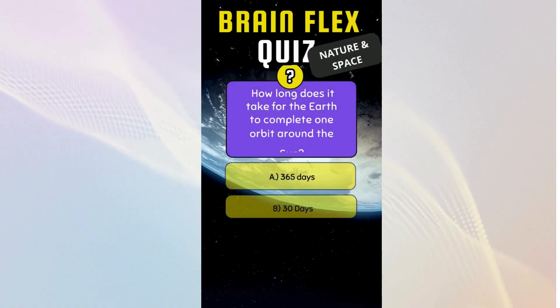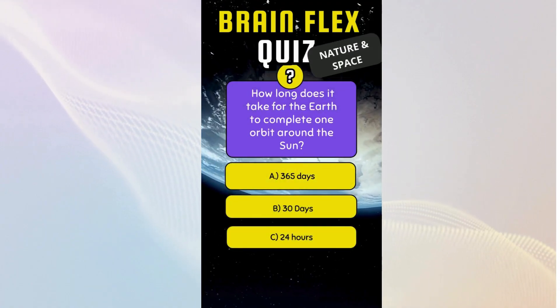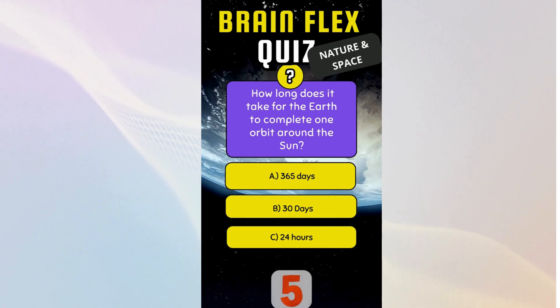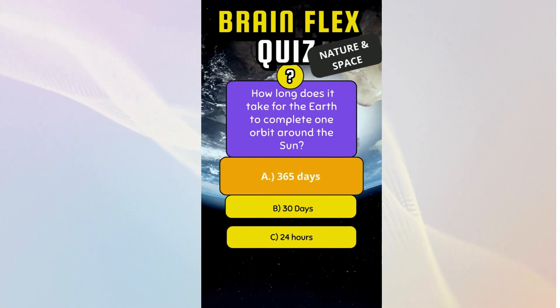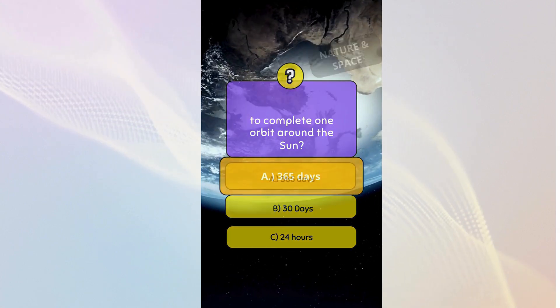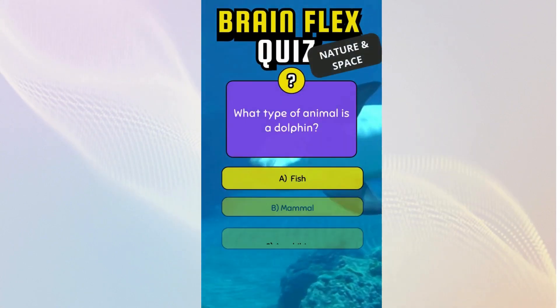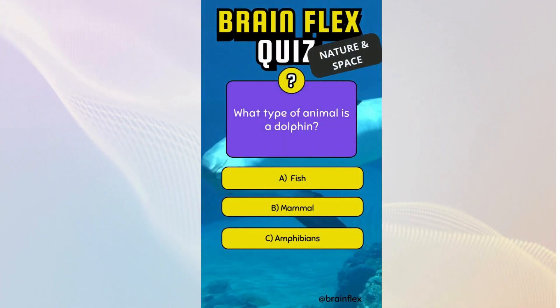How long does it take for the Earth to complete one orbit around the Sun? What type of animal is a dolphin?